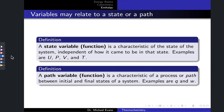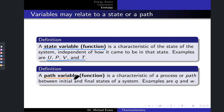This slide formalizes the definitions of state variables and path variables. A state variable or function is a variable that is characteristic of the state of the system, independent of how it came to be in that state. In chemical systems, state variables are represented with capital letters. Four that we're interested in are: U (internal energy), pressure, volume, and temperature — all state variables that depend only on the state of the system. A path variable, on the other hand, depends on the specific process or path between the initial and final states.